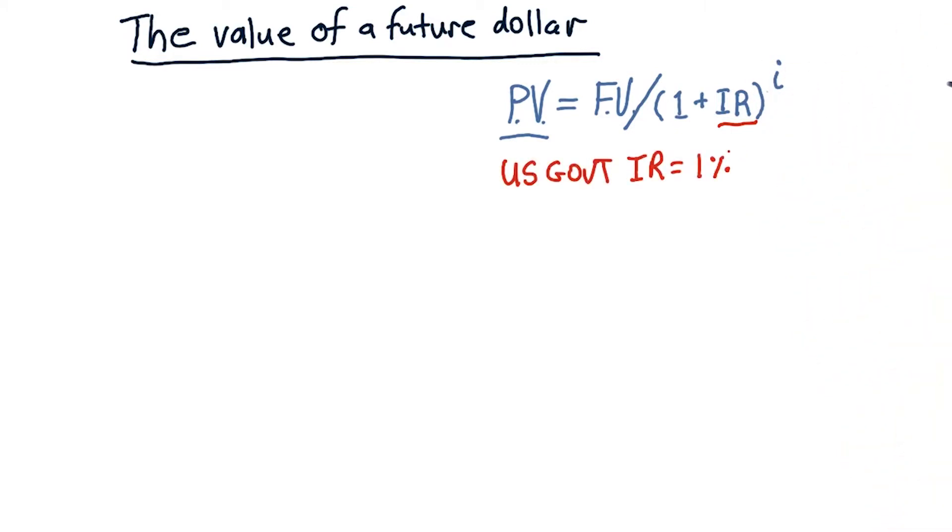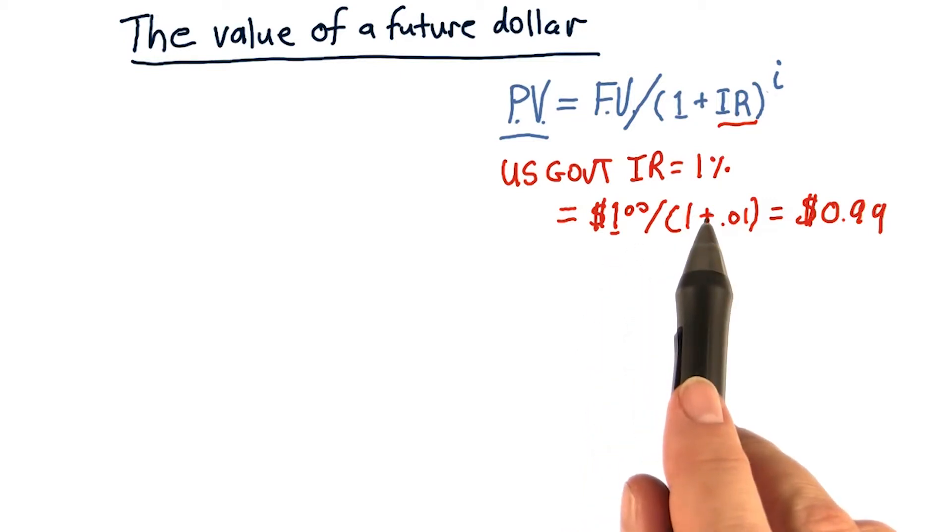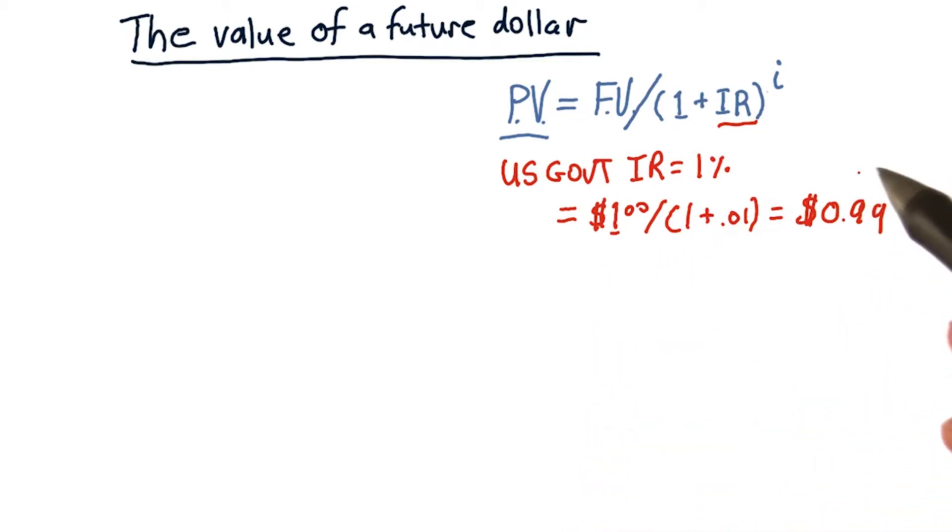Suppose with the United States government, because they're so trustworthy, you can negotiate a 1% interest rate. Actually, as of today, which is 2015, this 1 year interest rate is only 1 quarter of a percent. In other words, interest rates are very, very low. If you work it out, the value of a $1 bill paid to you in the future, one year from now, at a 1% interest rate is 99 cents.